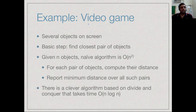For this, a naive algorithm would be to explicitly compute the distance between every pair of these n objects, which would be an O(n²) algorithm. What we are going to see is that we can actually use divide and conquer and produce an O(n log n) algorithm for this problem.